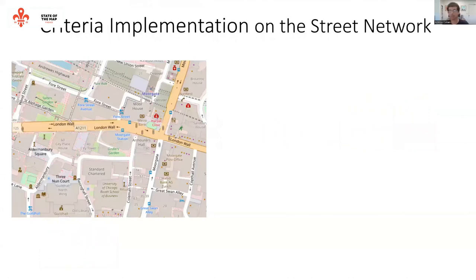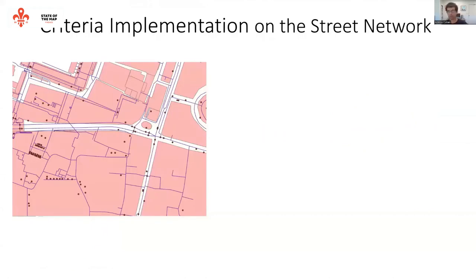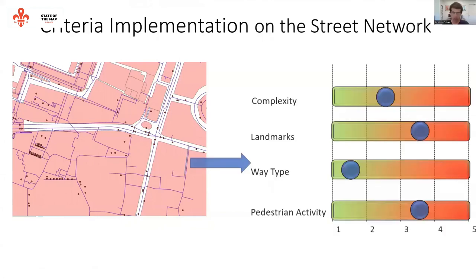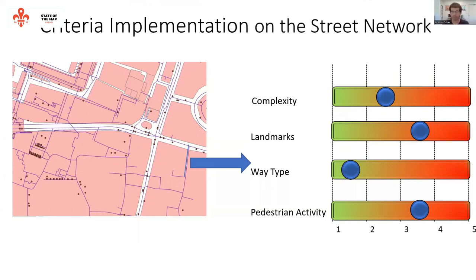The general idea is to take the OpenStreetMap data and convert it into a walking street graph, where each edge in the graph reflects a specific street in reality. We then examine each segment based on those criteria. The first criteria are based solely on OpenStreetMap data, while the last one — pedestrian activity — is also based on machine learning models trained on data from many different cities around the world.